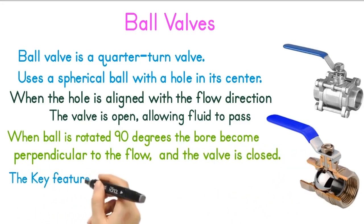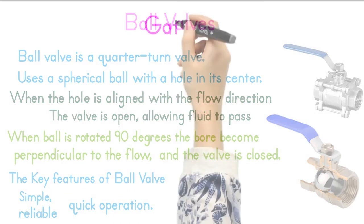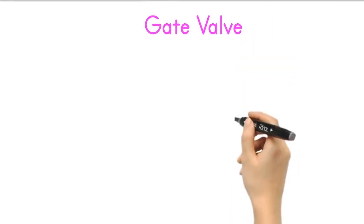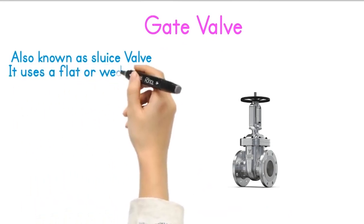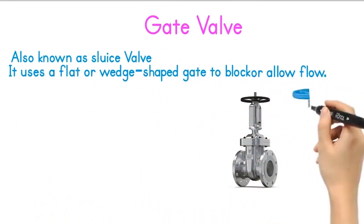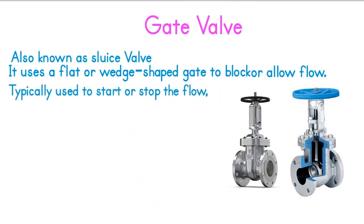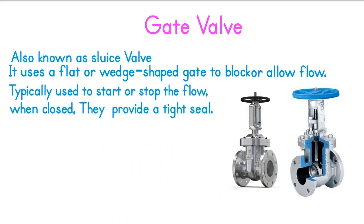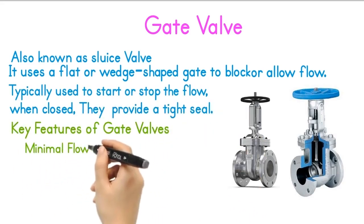The key features of ball valves are that they are simple, reliable, and quick in operation. Gate valves. A gate valve, also known as a sluice valve, uses a flat or wedge-shaped gate to block or allow flow. These valves are typically used to start or stop the flow in a pipeline, and when closed, provide a tight seal. A key feature is minimal flow restriction.